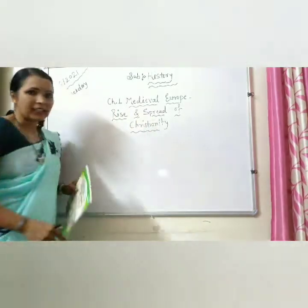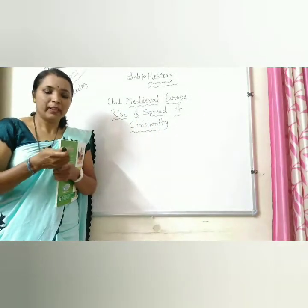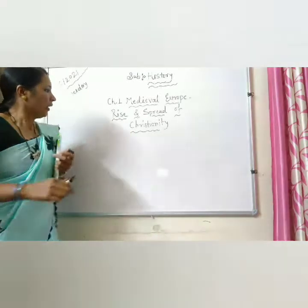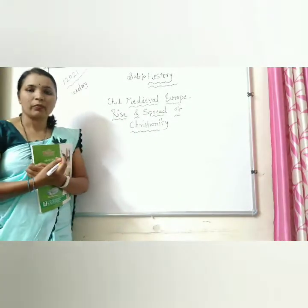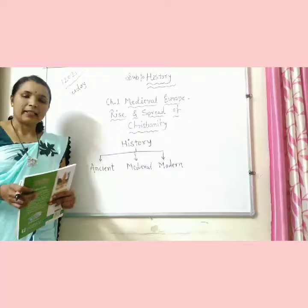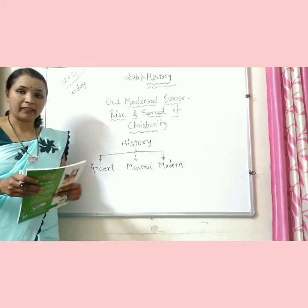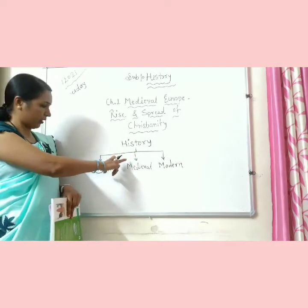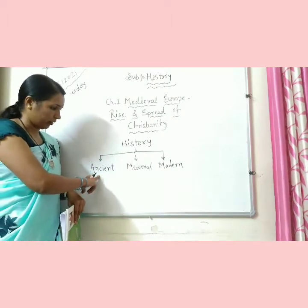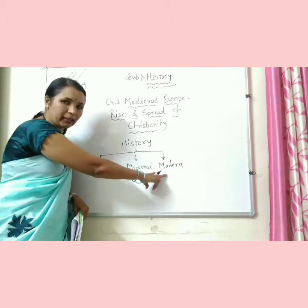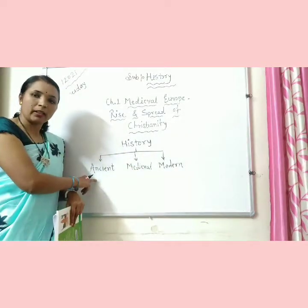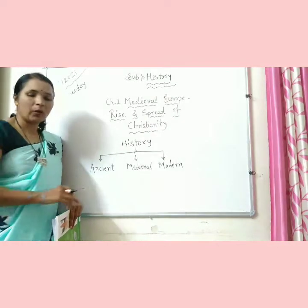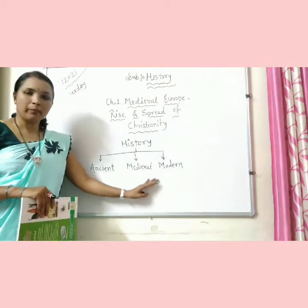Before we start this chapter, we will understand the concept of periodic time. For the convenience of the study of history, you are aware that history is divided into three periods: Ancient, Medieval, and Modern. In fifth standard we already studied about the Ancient period. Now in seventh standard we learn about the Medieval period.